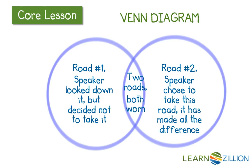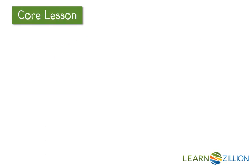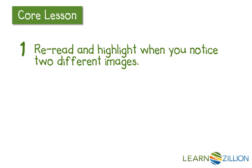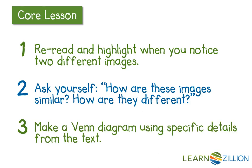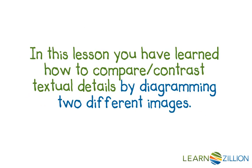Now that our Venn diagram is filled in, we have successfully compared and contrasted the two different roads in this poem. Here are the steps I followed: One, reread and highlight when you notice two different images. Two, ask yourself how are these images similar and how are they different. And three, make a Venn diagram using specific details from the text. In this lesson, you have learned how to compare and contrast textual details by diagramming two different images.